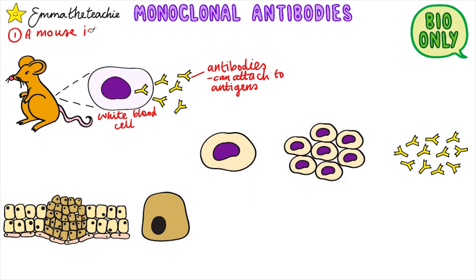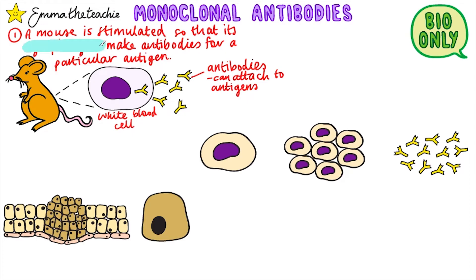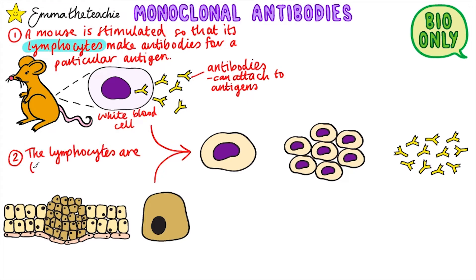In the first stage, a mouse is stimulated so that its white blood cells make antibodies for a particular antigen. You need to learn that these white blood cells are called lymphocytes. These lymphocytes are then combined with a particular type of tumor cell, which makes a new cell called a hybridoma.